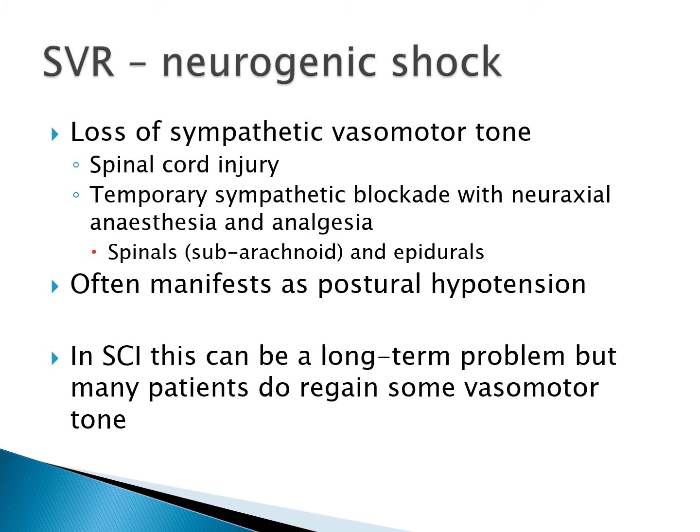In neurogenic shock, we see a loss of sympathetic vasomotor tone. This classically occurs in spinal cord injury due to trauma, or temporary sympathetic blockade from neuraxial anaesthesia such as spinal or subarachnoid blocks and epidurals. This often manifests as postural hypotension. In spinal cord injury this can be a long-term problem, but many patients do regain some vasomotor tone.